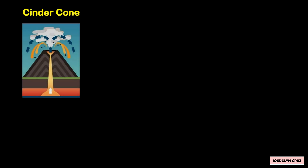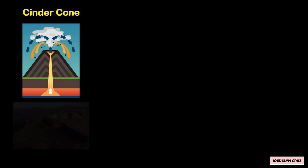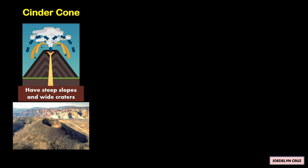Cinder cone volcanoes are formed when lava is thrown into the air, breaks into small fragments, and falls around the vent. They have steep slopes and wide craters.